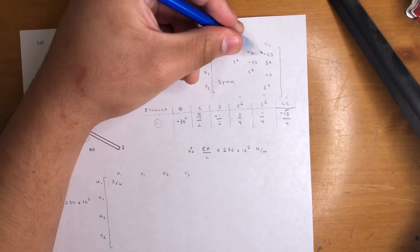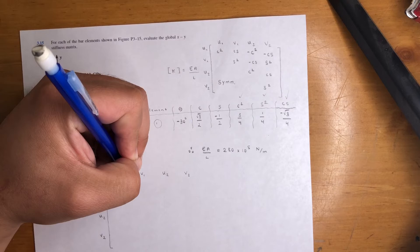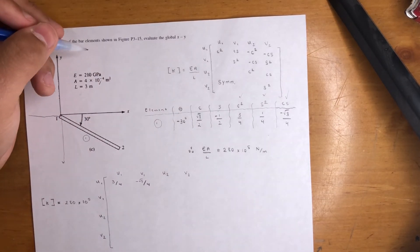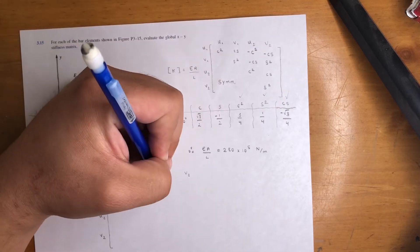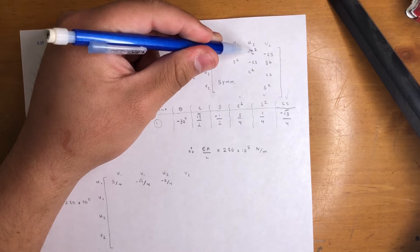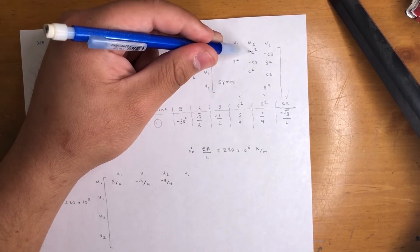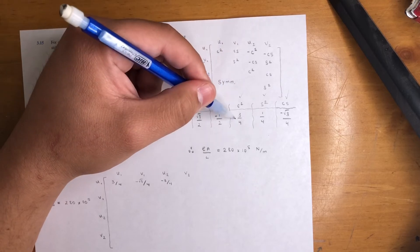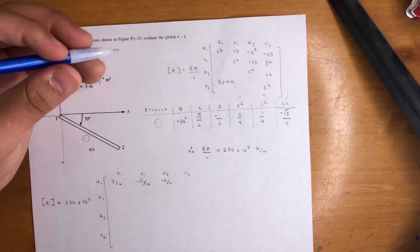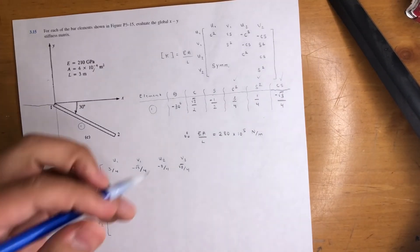Next one is C S negative C squared, negative C S. So that is C S right here, negative radical three over four. Next one is negative C squared, that's negative three over four. Don't get confused with the signs. This doesn't mean the negative is going to go away because you squared or whatever. We already got the values. Now this is just going to switch the sign of whatever it is here. So this was negative, it would have been a positive. Make sure you catch that or don't get confused. So that's the first row.